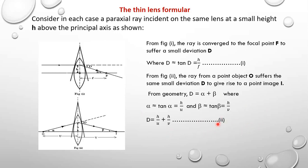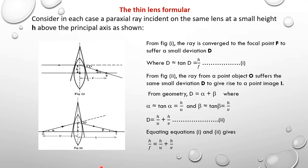Since alpha is H over U and beta is H over V, adding them gives D equals H over U plus H over V. Combining this with the first equation D equals H over F, we get H over F equals H over U plus H over V. Dividing through by H gives the general lens equation: 1 over F equals 1 over U plus 1 over V.